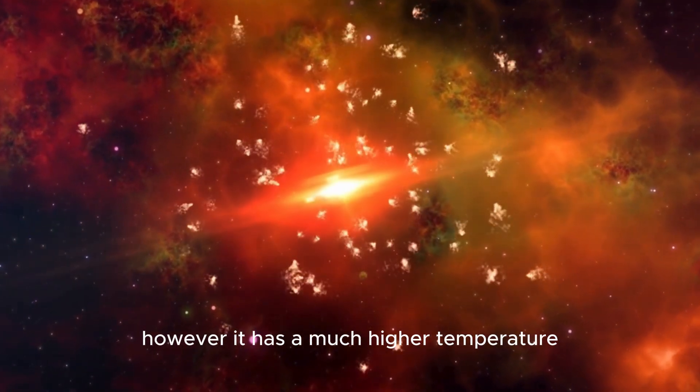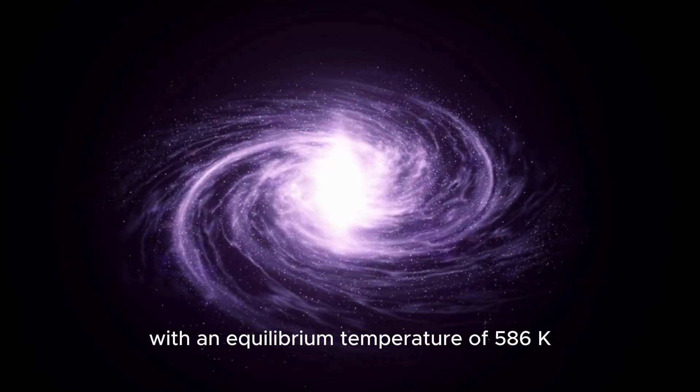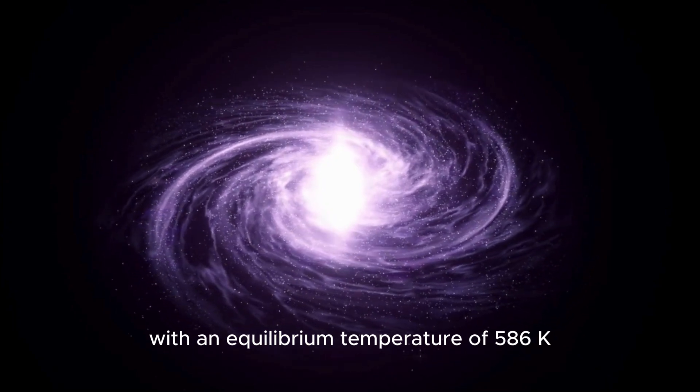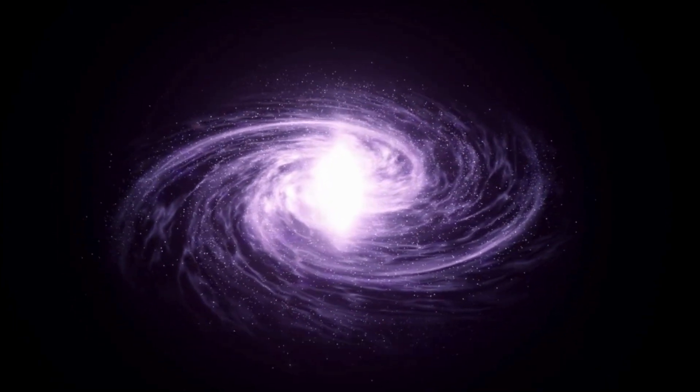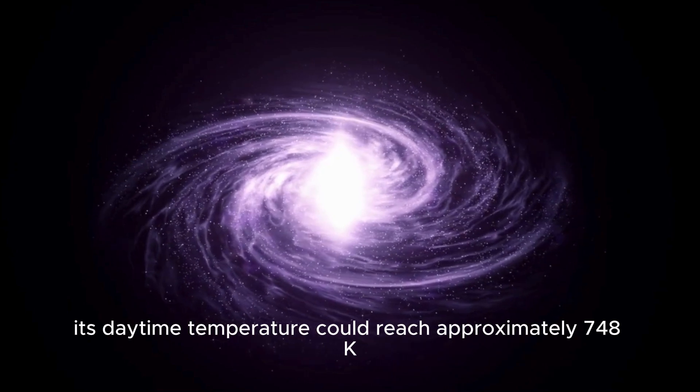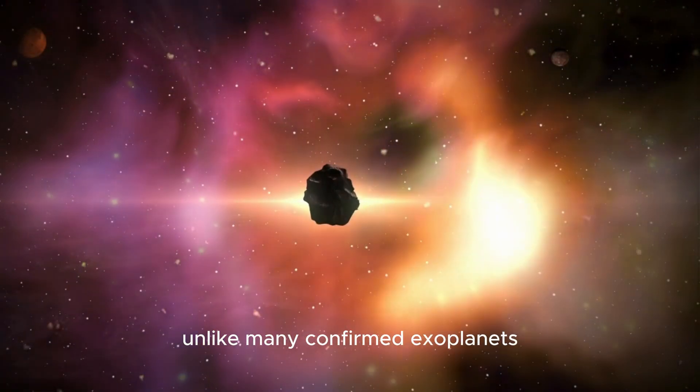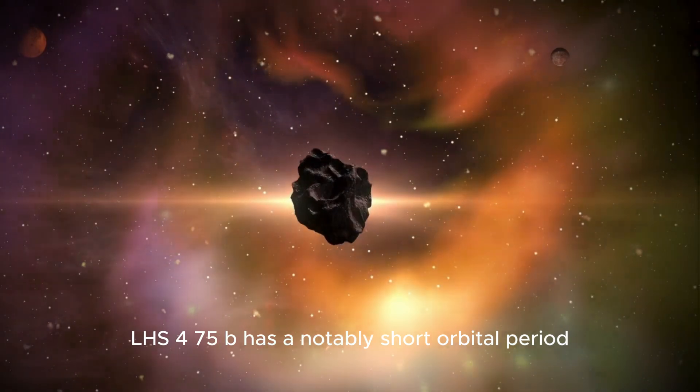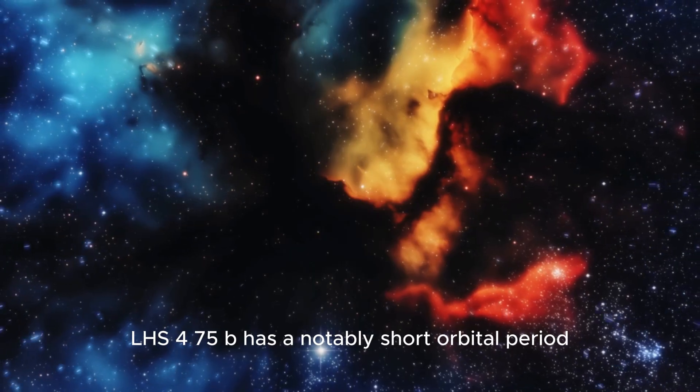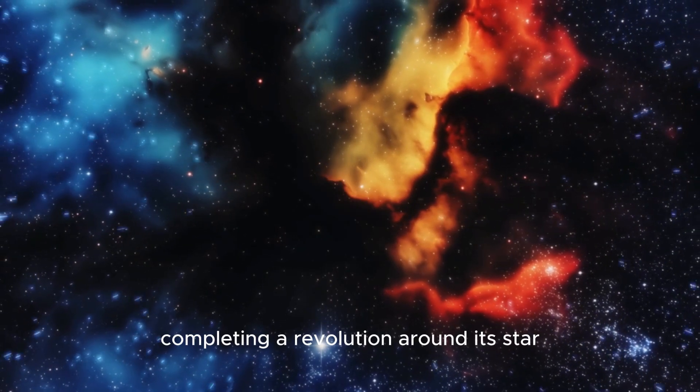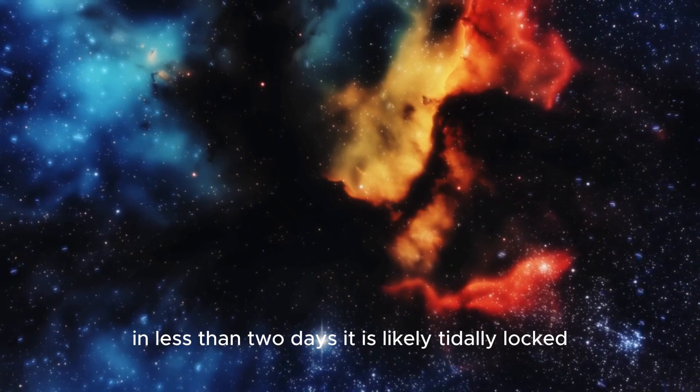However, it has a much higher temperature, with an equilibrium temperature of 586 K. If the planet has minimal atmosphere, its daytime temperature could reach approximately 748 K. Unlike many confirmed exoplanets, LHS 475b has a notably short orbital period, completing a revolution around its star in less than two days.